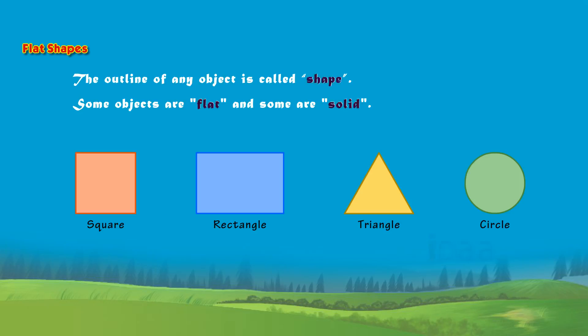Flat shapes are two-dimensional shapes. That means they have length and breadth.